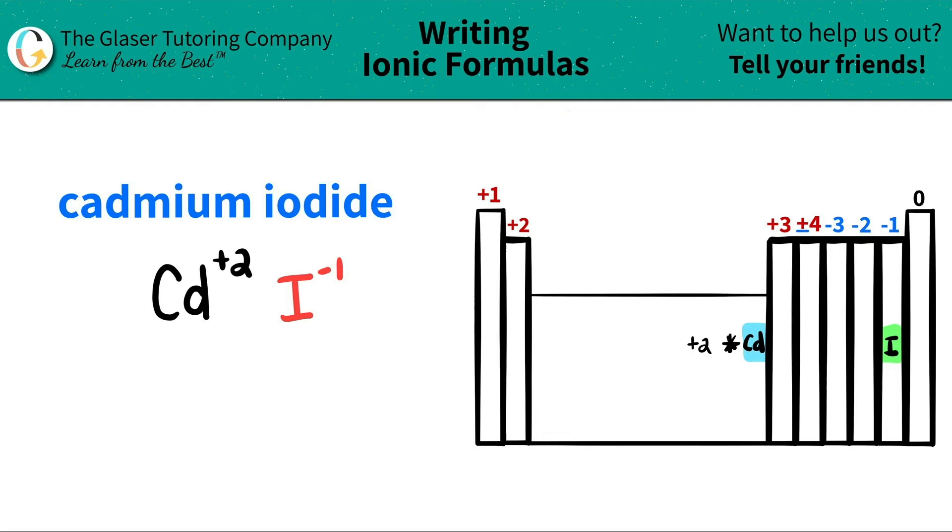Now, since I have both components, all I do is I use these charges and I crisscross them to say how many of each I have. So this two crisscrosses down telling me that I need two iodines. And this one crisscrosses down telling me that I need one cadmium. When you do this little trick, don't worry about the charges anymore. You're just worrying about the subscripts.